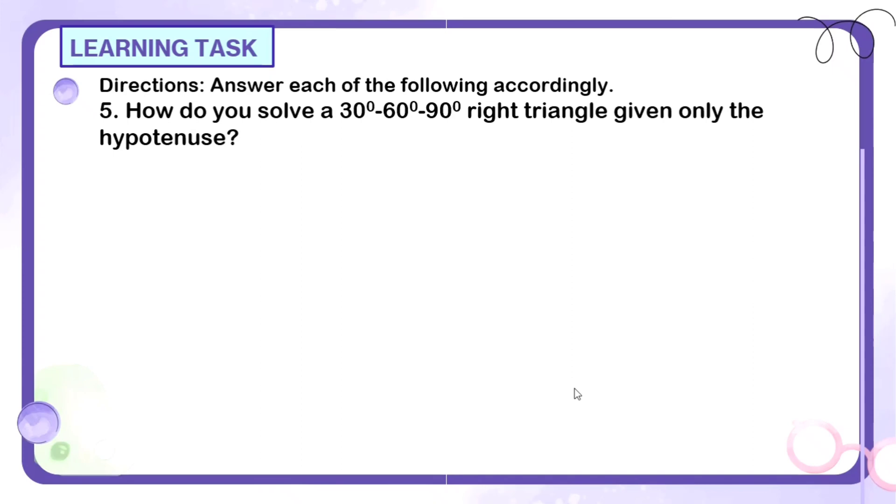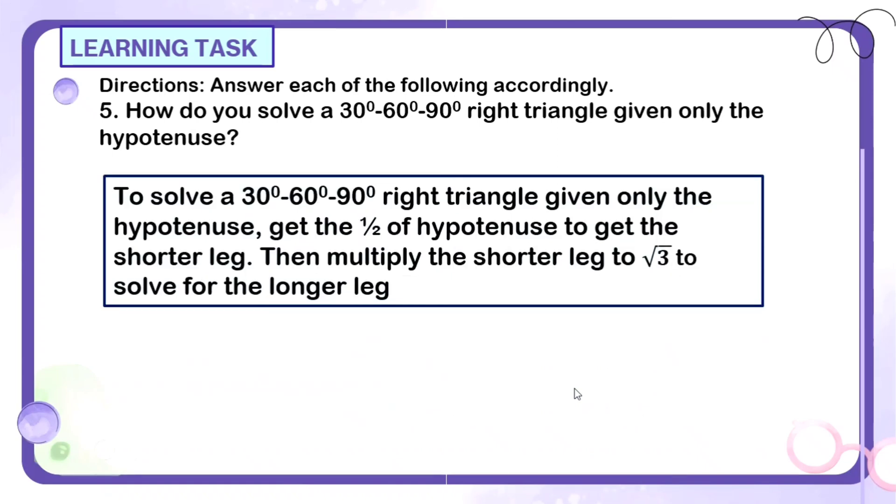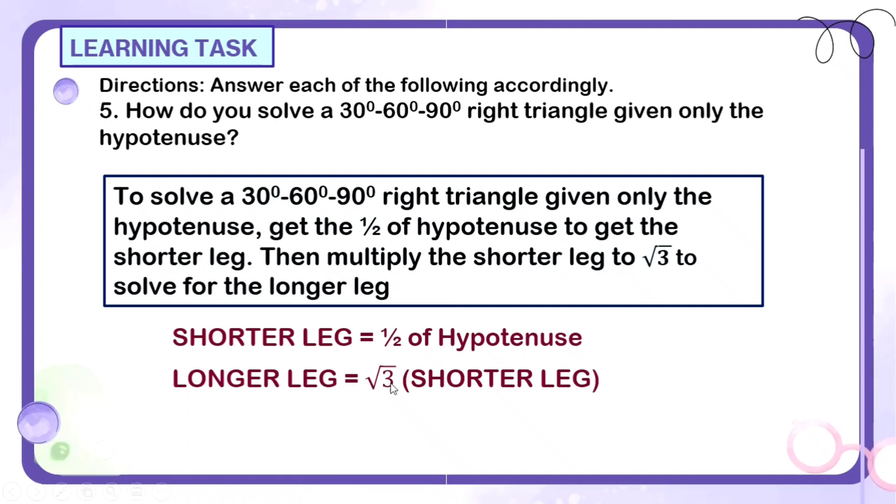Number 5, how do you solve a 30-60-90 right triangle given only the hypotenuse? Anyway, ito madali lang. Kung 30-60-90 tapos hypotenuse lang ang given, ganito lang ang gagawin mo. So, to solve a 30-60-90 right triangle given only the hypotenuse, get the one half of the hypotenuse. Yun ang una mong gawin. Purin mo yung kalahati ng hypotenuse na given. Pagkatapos, yung kalahati nun, yun yung magiging shorter leg. So, yung kalahati ng hypotenuse yung shorter leg. Then, kapag nakuha mo na yung shorter leg, i-multiply mo yung shorter leg sa square root of 3 para naman makuha mo yung longer leg. So, yung longer leg niya is square root of 3 times yung shorter leg. And then, makompleto mo na, meron ka na yung sukat ng shorter leg, longer leg, and hypotenuse. So, ganun lang tayo magsasolve ng 30-60-90 right triangle.